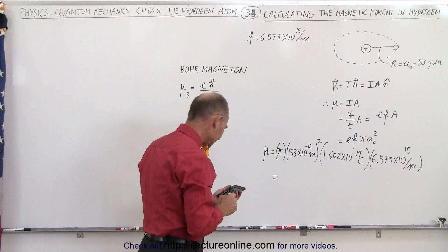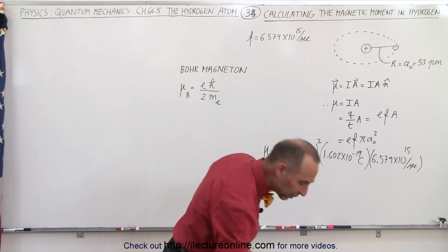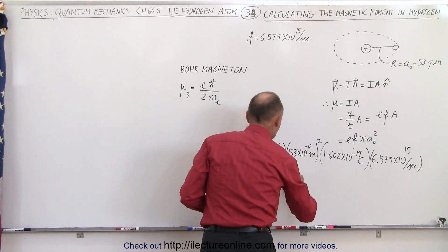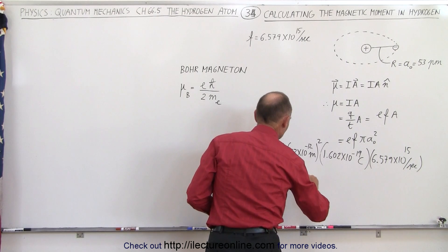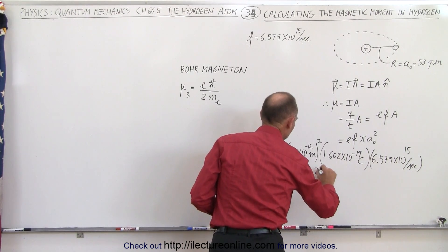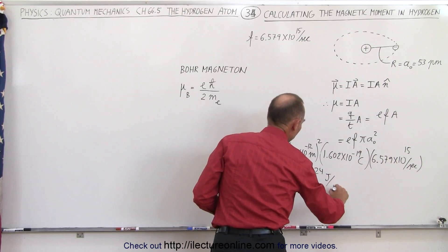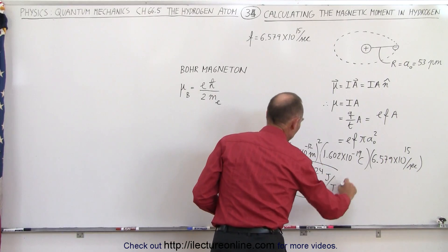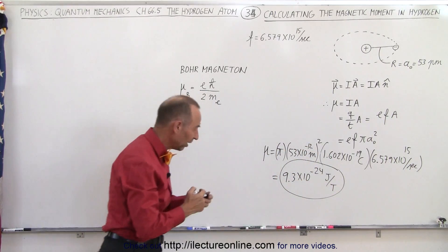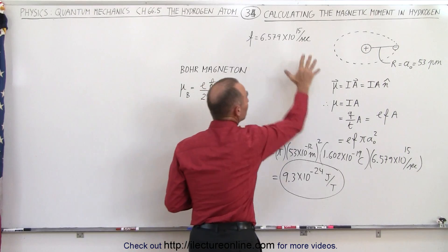There we go. Equals, and that gives us about 9.3 times 10 to the minus 24. That would be 9.3 times 10 to the minus 24 joules per tesla. So that's what we get using the equations and using the parameters that we know.